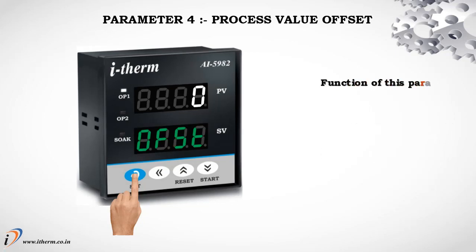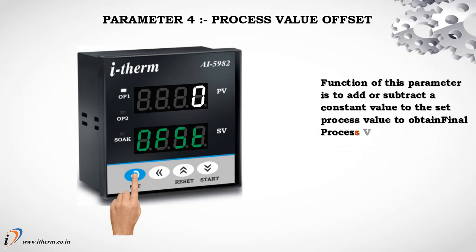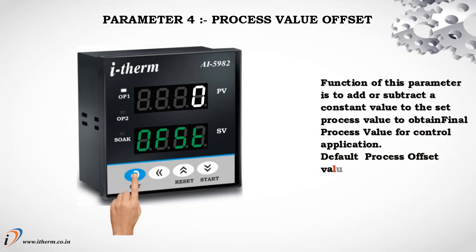Parameter 4: Process Value Offset. The function of this parameter is to add or subtract a constant value to the process value to obtain the final process value for control application. Default process offset value is 0.